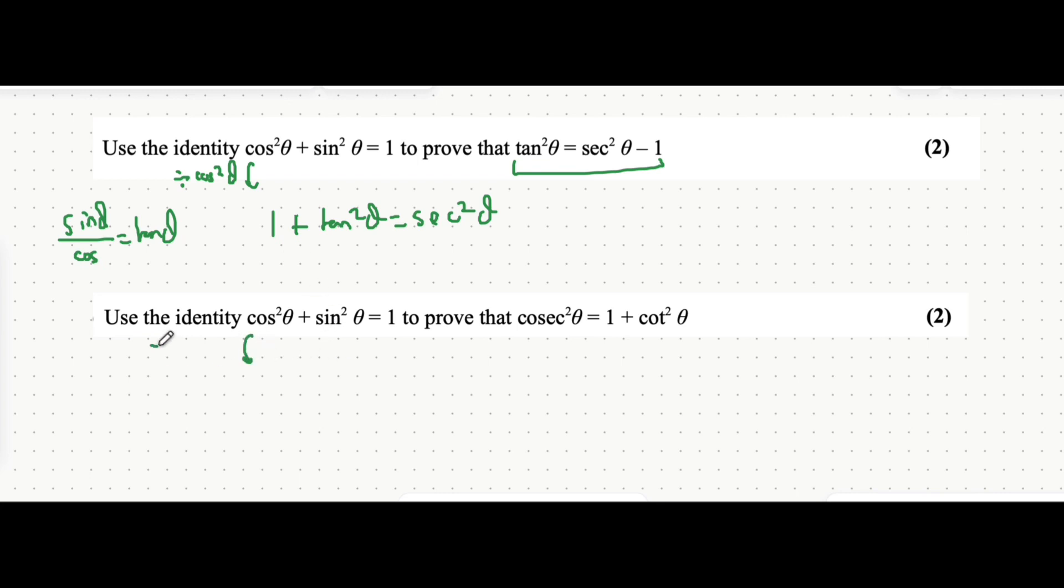If, however, you divided each individual term by sin squared theta, you'd actually end up at the other expression. That's what you should actually remember: dividing by cos squared and dividing by sin squared, because remembering these whole expressions is quite a handful.